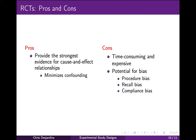The primary disadvantage of randomized controlled clinical trials is that they are time consuming and expensive. There is still some potential for bias in a randomized trial, although randomization removes many potential sources. Procedure bias may occur when the treatment group receives more attention than the control group. Recall bias may occur when subjects in one group are more likely to remember events than subjects in another, which would only cause bias if the outcome were self-reported. Compliance bias may occur when patients comply with one treatment more than another.